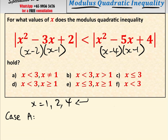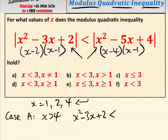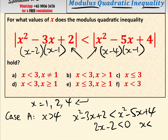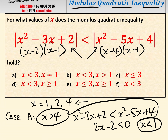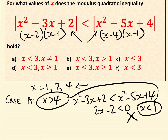Let's look at Case a: x greater than 4. When x is greater than 4, both of these quadratics are positive so we can ignore the modulus. We get x squared minus 3x plus 2 less than x squared minus 5x plus 4, which gives 2x minus 2 less than 0, i.e. x less than 1. Clearly x can't be less than 1 if it has to be greater than 4, so there are no solutions in Case a.